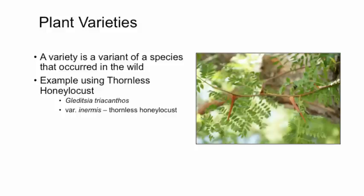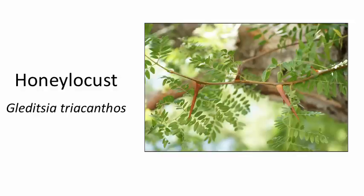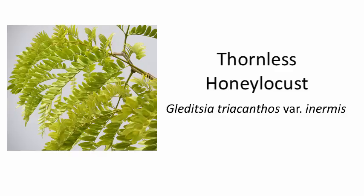Plant varieties are a variant of a plant species where the variation happened in the wild with no influence by man. Varieties are similar to a subspecies. The thornless honey locust is an example: the normal species is simply honey locust with the scientific name Gleditsia triacanthos. Triacanthos means three-spined, referring to the three points of each thorn. A thornless variant was found in the wild and was given the variety name inermis, which means unarmed, and so the variety is thornless.